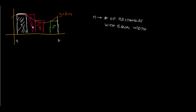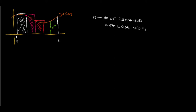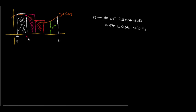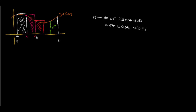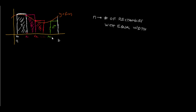So we have our rectangles drawn. After that, let's designate the points where they meet the domain. Starting at rectangle 1, we designate this as x sub 0. The next point, at rectangle 2, is x sub 1. At rectangle 3, it's x sub 2, and so on until we reach the last rectangle, which is x sub n minus 1.